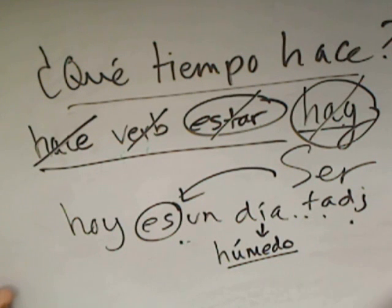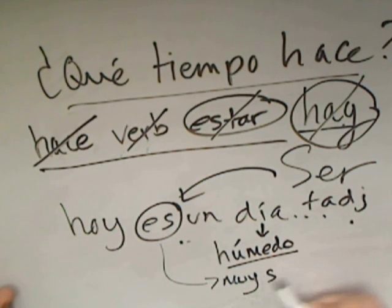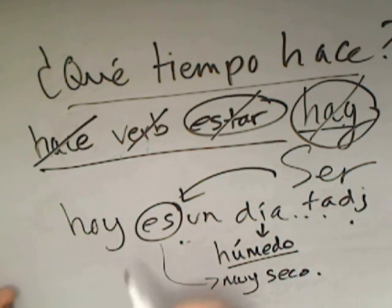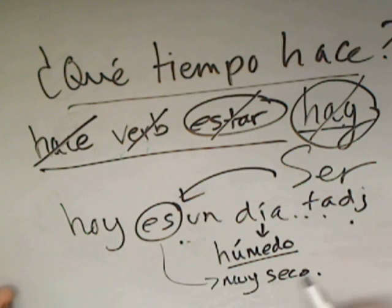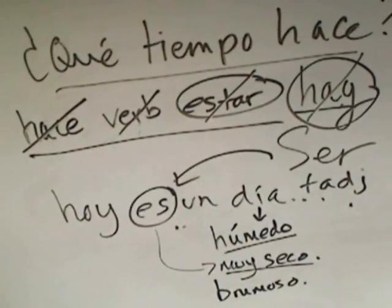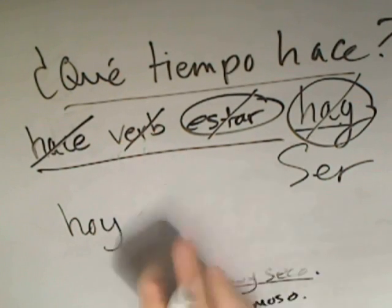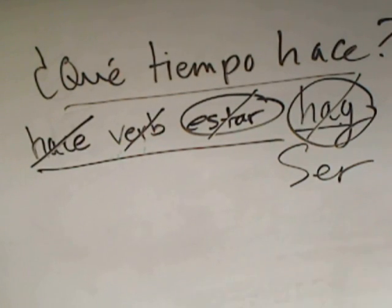Es un día húmedo — so remember with hay we said hay humedad, but with ser it's es húmedo; el día, which is masculine, es húmedo. The opposite would be very dry — like if I'm in Albuquerque, New Mexico: Albuquerque es muy seco, or el clima de Albuquerque es muy seco. Or very misty, foggy: brumoso. So just different ways using these five formulaic forms to talk about the weather.